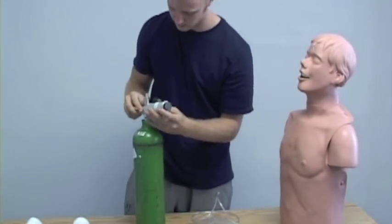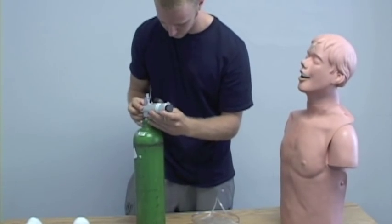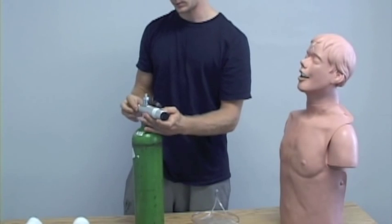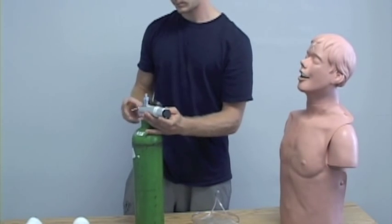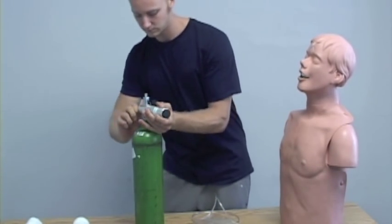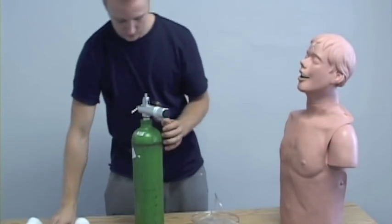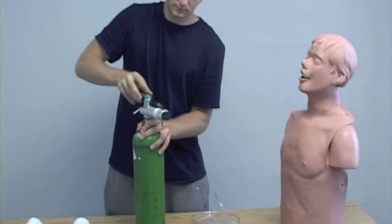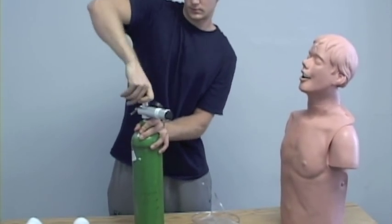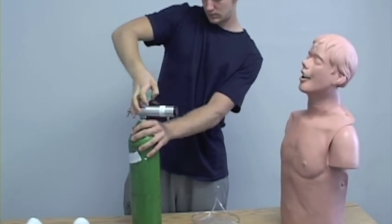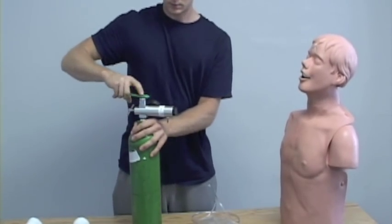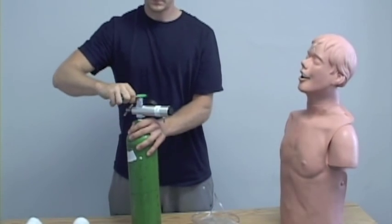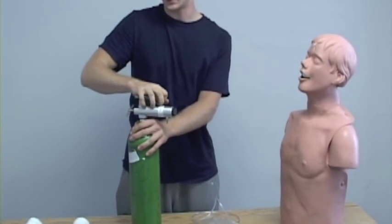Now I'm going to apply. Make sure it's off. Open it all the way to check for any leaks. Check the pressure. Pressure's good. Close it again. Then open it from a half to full turn.